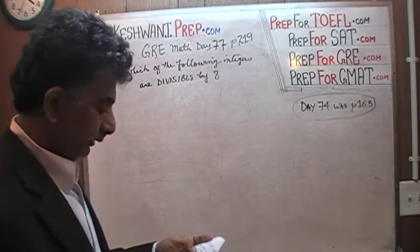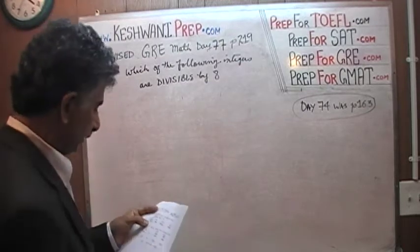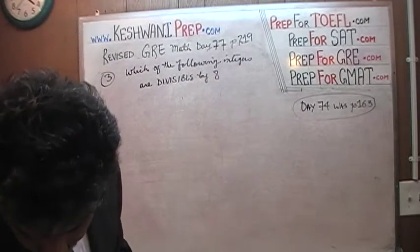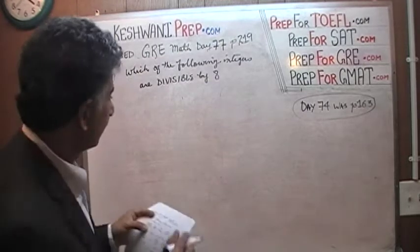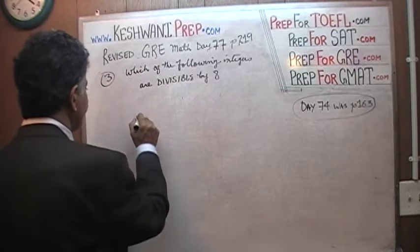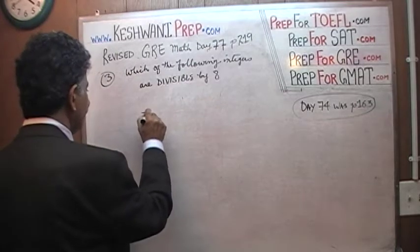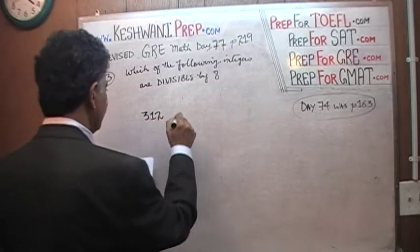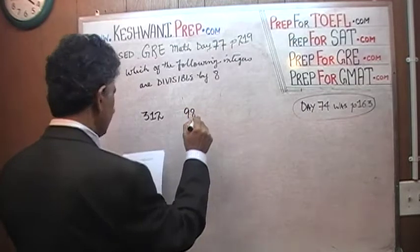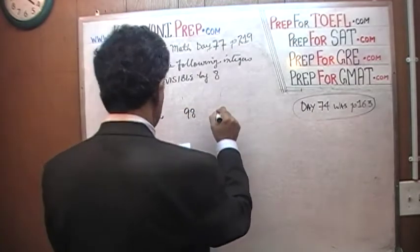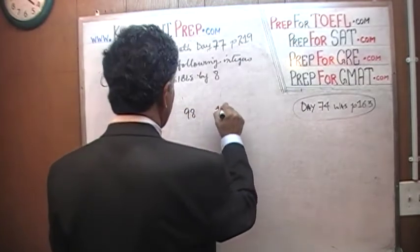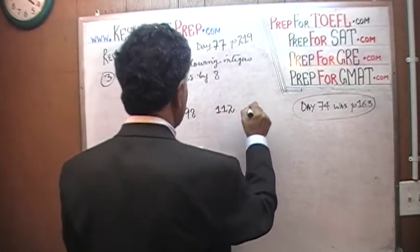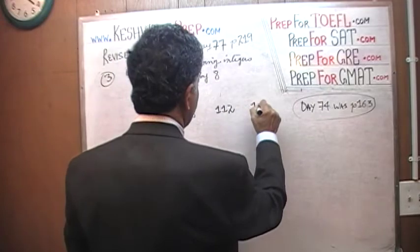So, which of the following integers are divisible by 8? Let's write down the integers first. They give you 312, 98, 112, and finally 144.